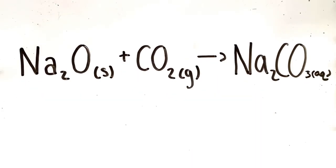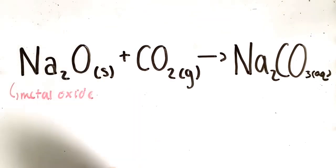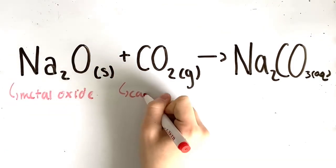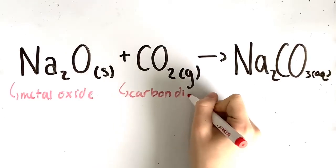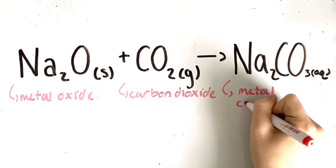Finally, a metal oxide plus carbon dioxide yields a metal carbonate. For example, sodium oxide plus carbon dioxide yields sodium carbonate. Sodium oxide is our metal oxide, CO₂ is the carbon dioxide, and sodium carbonate is our metal carbonate.